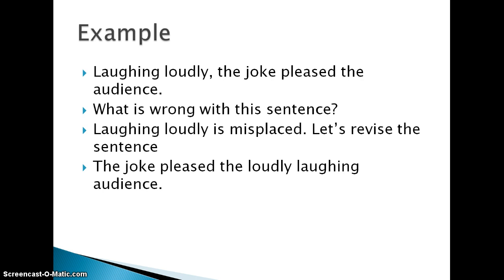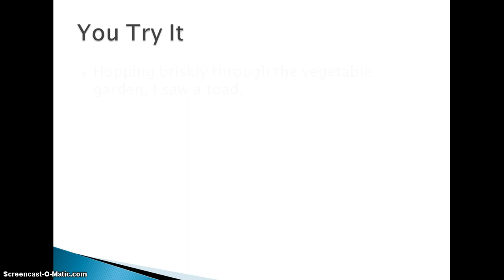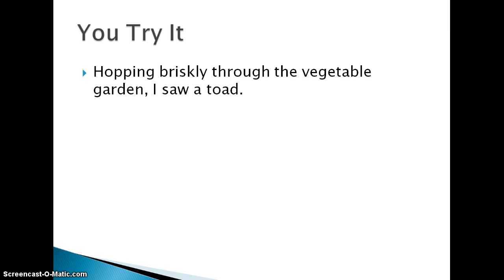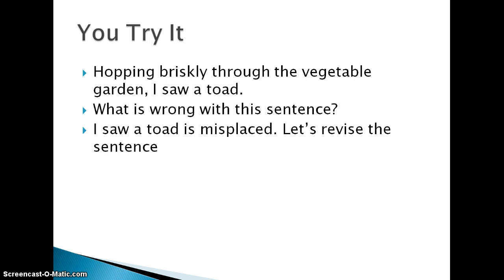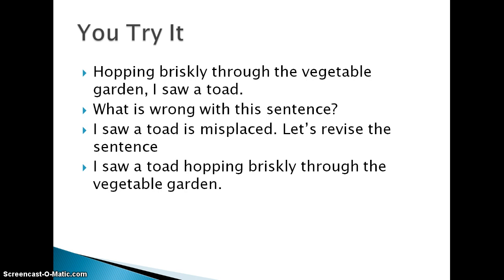Now you try it. Here's an example: "Hopping briskly through the vegetable garden, I saw a toad." What is wrong with this sentence? We're looking for a misplaced modifier. The question to ask yourself is: who is hopping briskly through the vegetable garden — the toad or the person who saw the toad? The revised sentence is: "I saw a toad hopping briskly through the vegetable garden." Now the sentence makes more sense, and we know who saw the toad and who was hopping through the garden.